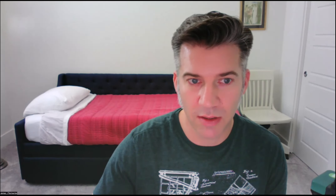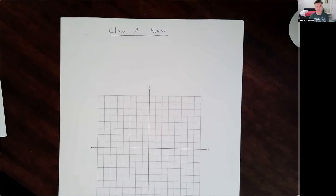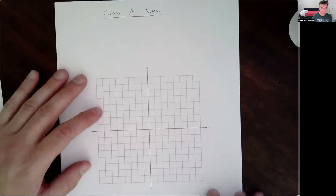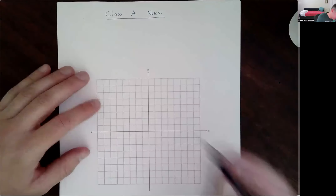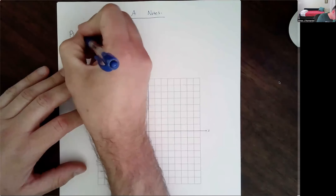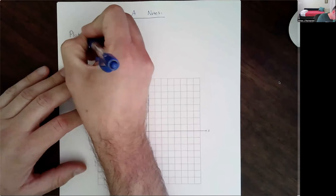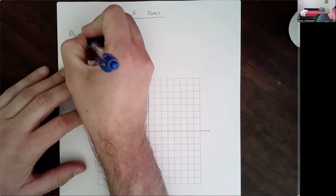Let me share my screen here. You can see that and see my face as well. So, Class A notes — plotting points. Let's give ourselves a few points to plot. For example, let's say we've got the following.